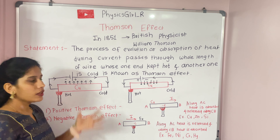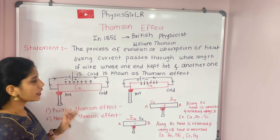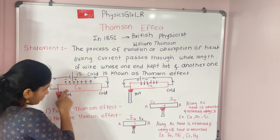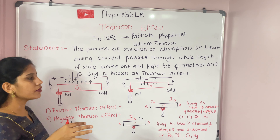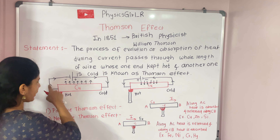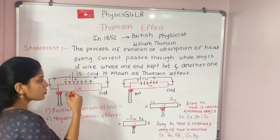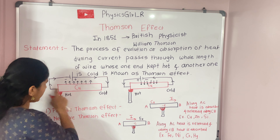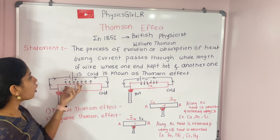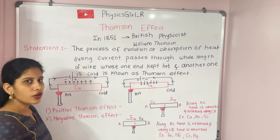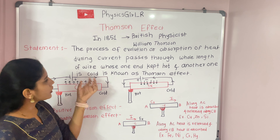Now apply current by connecting this copper wire to an external battery with a positive terminal and a negative terminal. We know that electrons flow from higher potential to lower potential, and the direction of current is exactly opposite to the flow of electrons. So this is the direction of current flow through this copper conducting wire, and in this case there is evolution of heat from the copper.